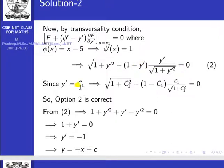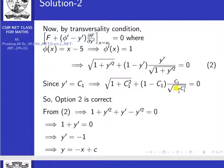Replacing y-dash with c1 from the extremal y equal to c1*x plus c2: root(1 plus c1 squared) plus (1 minus c1) times c1 divided by root(1 plus c1 squared) equal to 0. This is exactly Option 2, so Option 2 is correct.